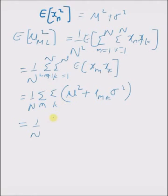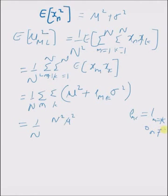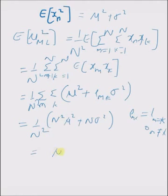The first part equals n² times μ², since there are n² terms. Since δ_mk equals 1 only when m equals k and 0 otherwise, the summation gives only n times σ², since there are only n non-zero terms. Therefore, the expectation of μ_ml squared equals μ² plus (1/n)·σ².